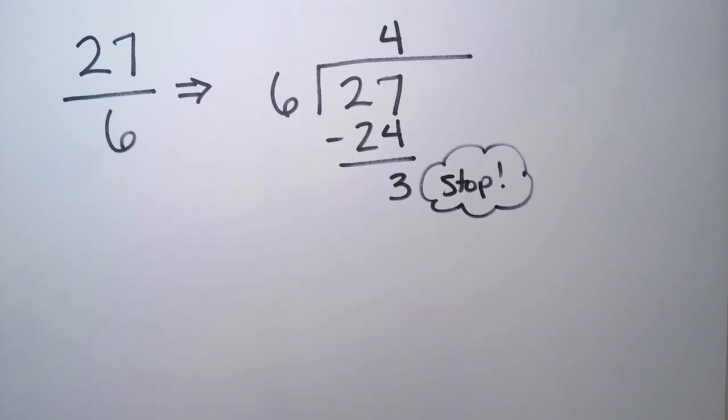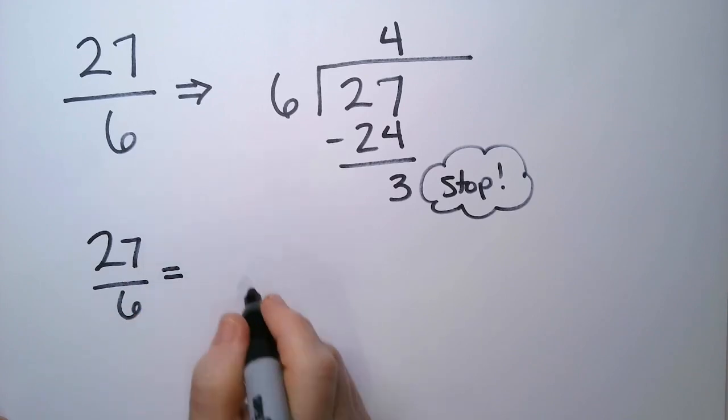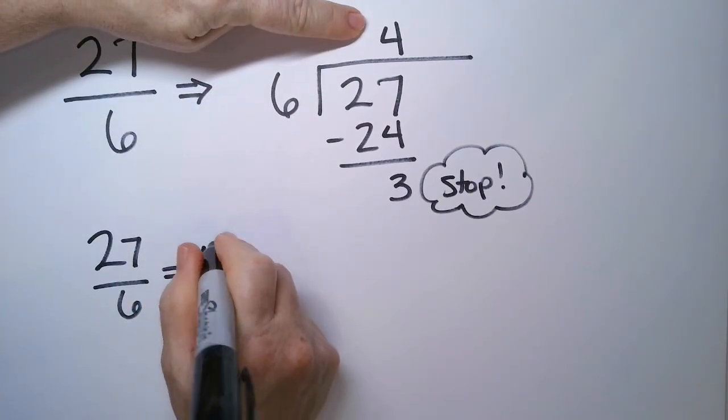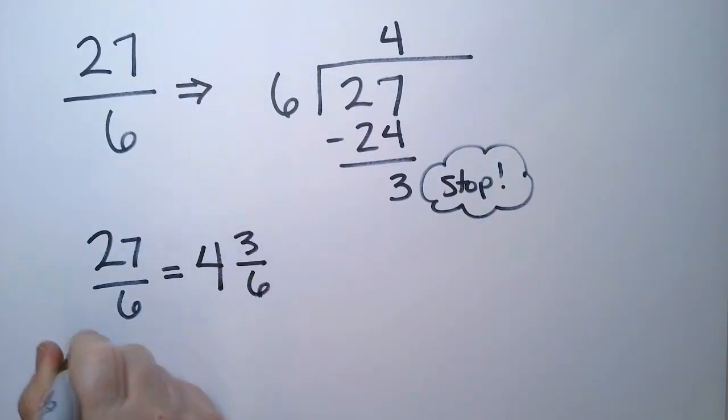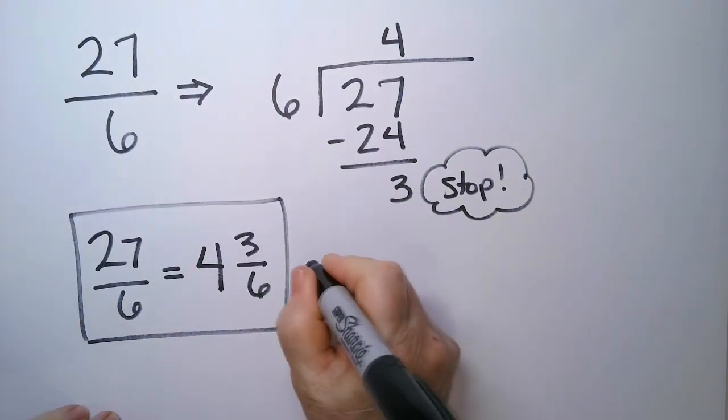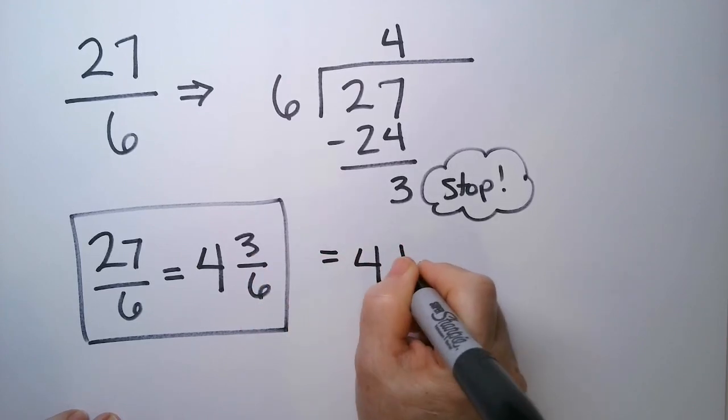We have everything we need to solve the problem. So 27 over 6 is the same as saying the whole number is 4 and 3 over 6. You could further reduce this by dividing the top and bottom by 3, so it's the same as saying 4 and a half.